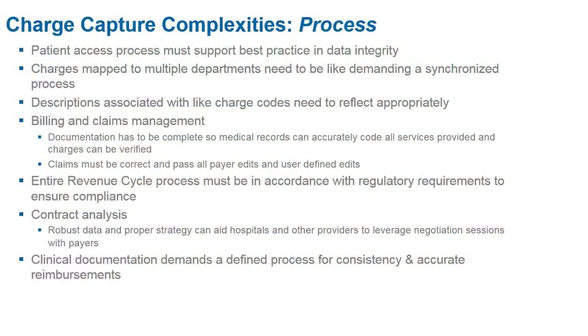Now let's discuss complexities from a process perspective. Patient access is probably the first point where patients engage with your process from a hospital perspective. Are we making sure we're getting the correct spelling of the patient's name, their date of birth, and their payer information documented appropriately in your systems? These seem like trivial things, but from a revenue integrity perspective they're crucial. Make sure processes are in place so people can follow them appropriately.